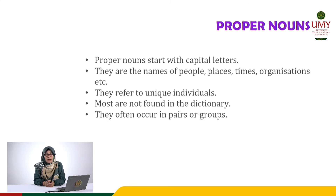What are the characteristics of proper nouns? Number one, proper nouns start with capital letters, so every time you write about proper nouns, don't forget to use capital letters. Proper nouns are also names of people, places, time, organization, etc. — for example, Johan, Mariam, the Philippines, Monas, and many more. Proper nouns usually refer to unique individuals, so Johan and Mariam are of course different. Most proper nouns are not found in the dictionary and often occur in pairs or groups.